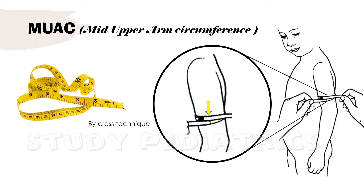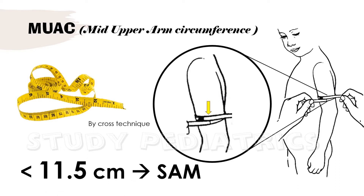We deduct the extra amount from the final reading obtained. This cross section technique is more accurate than the simple end technique. A value less than 11.5 cm on reading indicates the child may be malnourished, hence may have SAM.